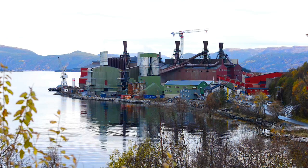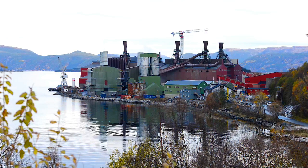As Norway has a large amount of renewable electrical energy from hydropower, there are several plants producing silicon and ferrosilicon, like Elkem, Vakker, and Finnfjord.